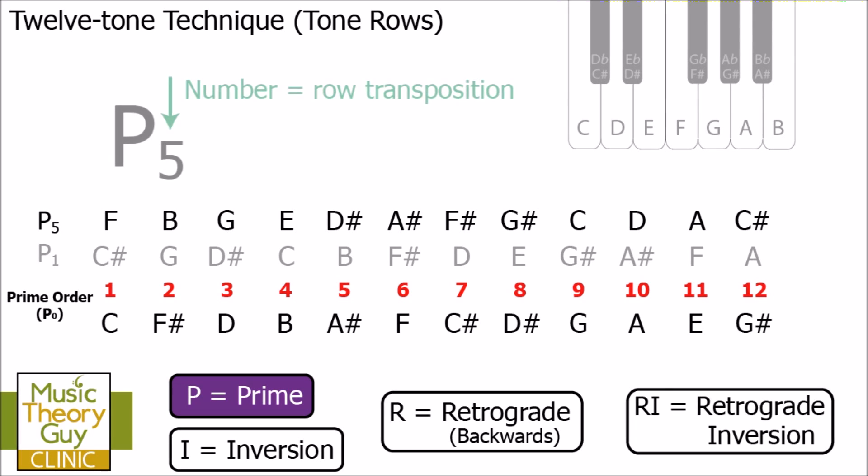So, just remember that the number next to the row letter, that just refers to the row transposition or how many semitones or half steps the prime order's got to be changed to get to that particular row. So, if we looked at P-11, all we do is take P-0 and move all of the notes up by 11 semitones or 11 half steps. Okay.